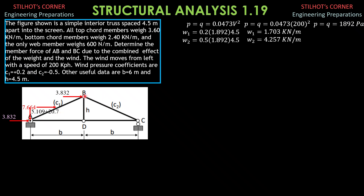At joint B-C, let's compute the wind load horizontal first. It equals 4.257 kilonewtons per meter times H (4.5) divided by 2, giving 9.578 kilonewtons. This is automatically transmitted at B horizontally, and also 9.578 kilonewtons at C horizontally. Note that the 25.809 at joint A is 5.109 plus 20.7 kilonewtons.